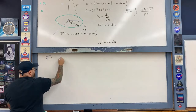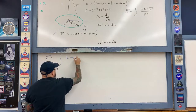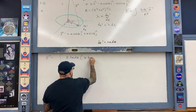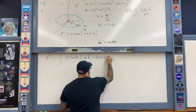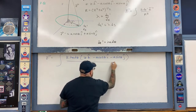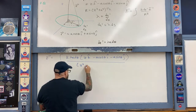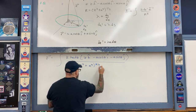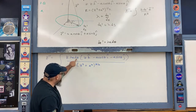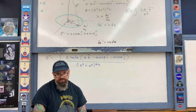Writing out the integral: k times dq prime is k lambda a d-theta, multiplied by the capital R vector which is z k-hat minus a cosine theta i-hat minus a sine theta j-hat, all divided by the magnitude of capital R cubed, which is (z² + a²) to the three-halves power. The variable we're integrating over is the angle theta, and to go all the way around the ring the limits are from 0 to 2π.